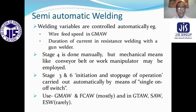Semi-automatic welding: welding variables are controlled automatically — that is wire feed speed in gas metal arc welding, and duration of current in resistance welding with a gun welder. Stage four is done manually, but mechanical means such as a conveyor belt or work manipulator may be employed. Stages three and six — initiation and stoppage of operation — are carried out automatically by means of a single on-off switch. Used mostly in gas metal arc welding, flux core arc welding, and also in gas tungsten arc welding, submerged arc welding, and drag welding, rarely.